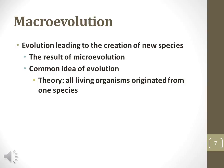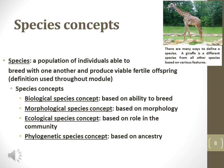Macroevolution occurs as a result of two populations turning into separate species as a result of many microevolutionary events. The modern synthesis of evolution describes that all living organisms originated from a single organism. Species may be defined in different ways. Most commonly, species is defined as a population of individuals able to breed with one another and produce viable, fertile offspring — known as the biological species concept. The morphological species concept is based on phenotypic characteristics. The ecological species concept is based on ecological roles in a community. The phylogenetic species concept is based on the genetic ancestry of an organism.